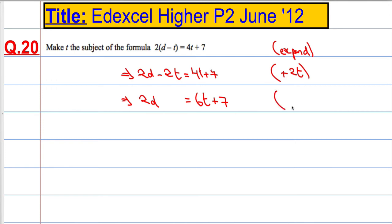Next, I'm going to take 7 off both sides. So taking 7 away from both sides, we get 2d minus 7 equals 6t.